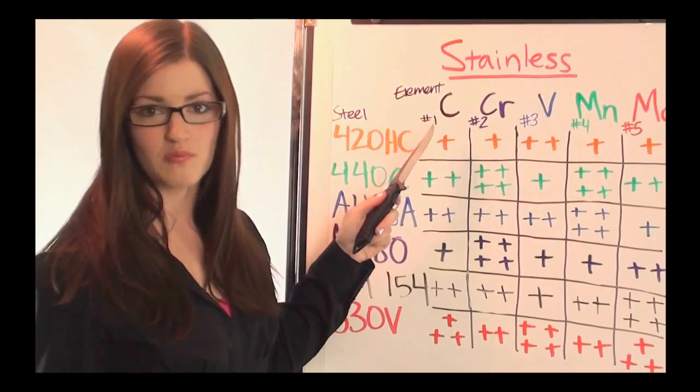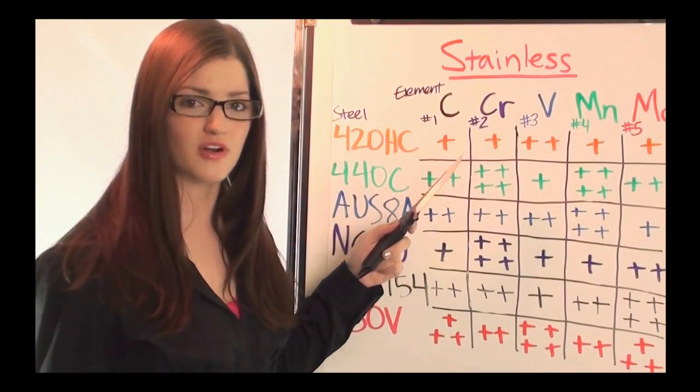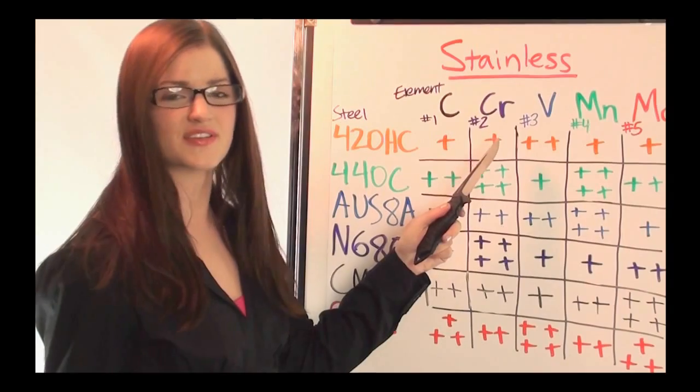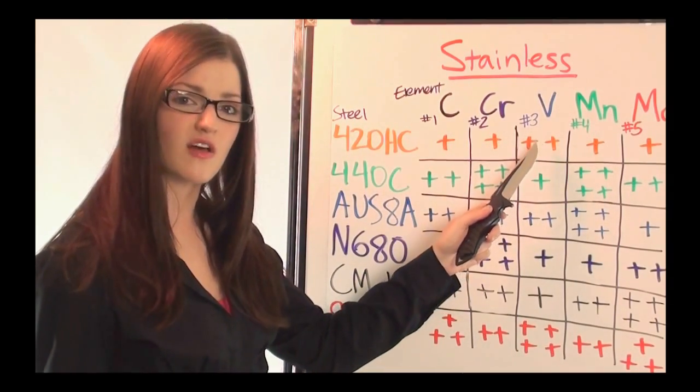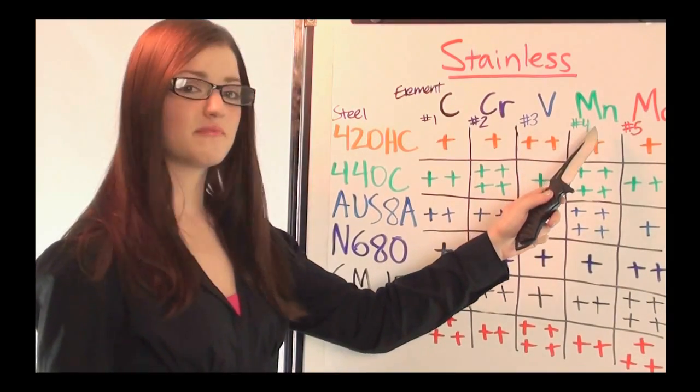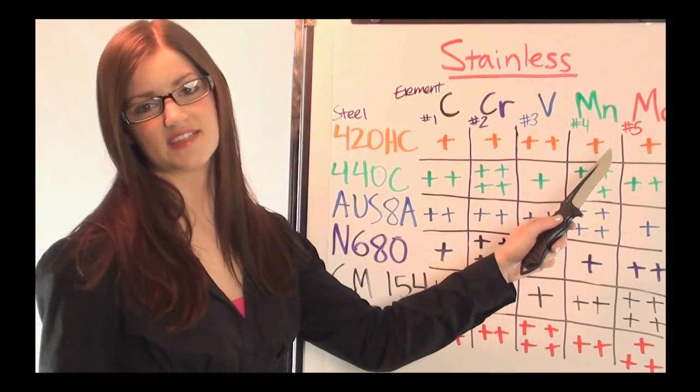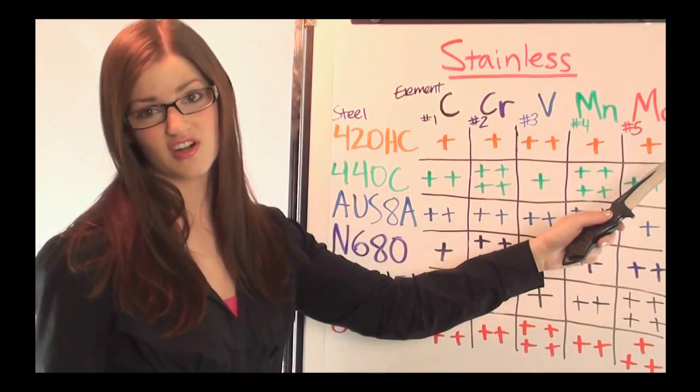Like carbon - that actually will make the blade stronger, just like my first point from before. Chromium increases the corrosion resistance for the steel. Vanadium will help the steel get a sharper edge. Manganese will increase the wear resistance, and molybdenum actually makes the steel tougher.